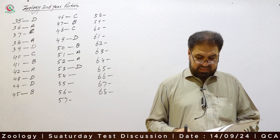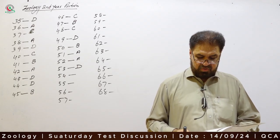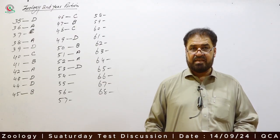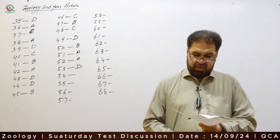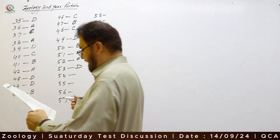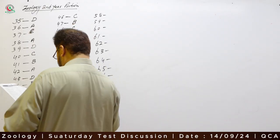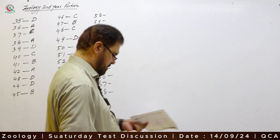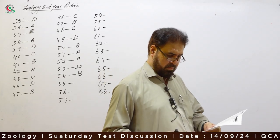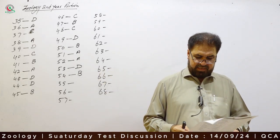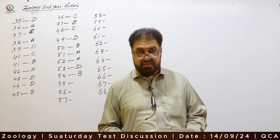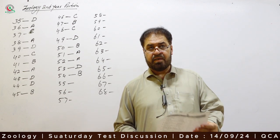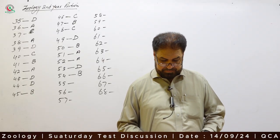Question 54: The collection of neuron cell bodies outside the central nervous system is called a ganglion, plural ganglia. Correct option is B. Ganglia are collections of cell bodies of neurons in the peripheral nervous system.